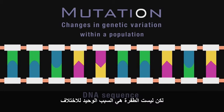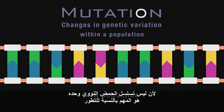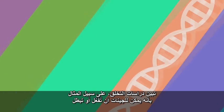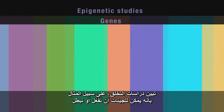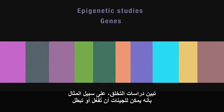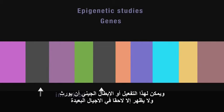But mutation isn't the only cause of variation, because it's not only the DNA sequence that's important to evolution. Epigenetic studies, for example, show that genes can be switched on or off, and that this genetic activation or inhibition can be inherited and expressed in later generations.